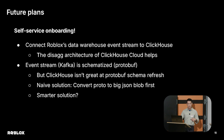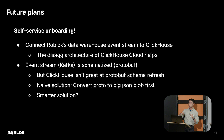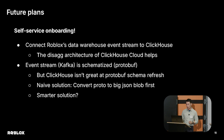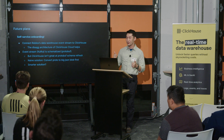Our event stream is protobuf-schematized, and this is the part I'm still figuring out. ClickHouse, at least the on-prem version, isn't great at protobuf schema refresh — you have to restart the node to pick up a new schema. What we're currently doing is converting protobuf into a single field as a big JSON blob, and then using materialized views to reconstruct what the table is supposed to look like with all the proper columns. I don't know of a better way to solve it — if you do, let me know.